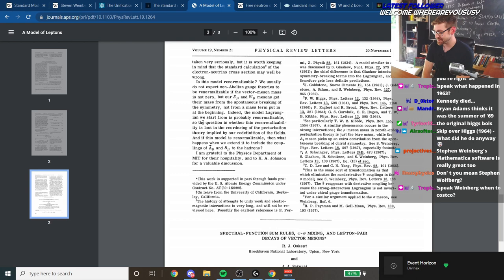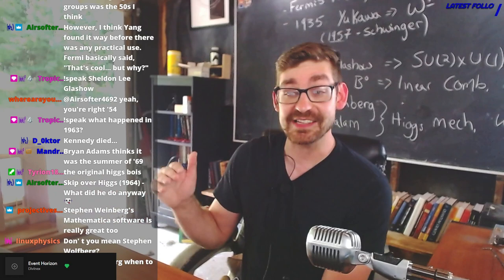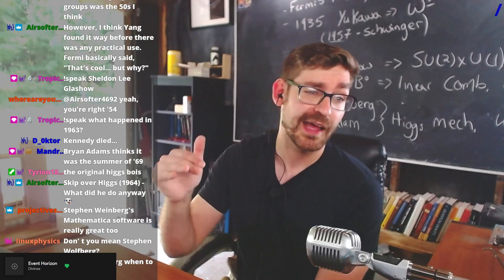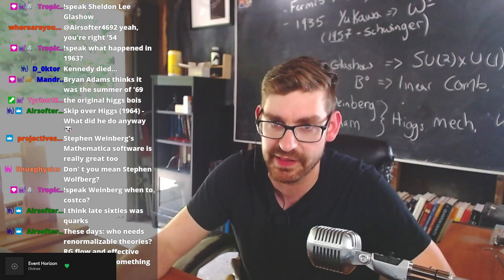This is what Weinberg says in the end of this 1967 paper. Is this model renormalizable? We usually do not expect non-abelian gauge theories to be renormalizable if the vector meson's mass is not zero. Our Z_mu and W_mu mesons get their mass from spontaneous symmetry breaking, not from a mass term put in at the beginning. Indeed the model Lagrangian we start from is probably renormalizable. He didn't even renormalize it. His wife said something along the lines of, at least he renormalizes his own theories.